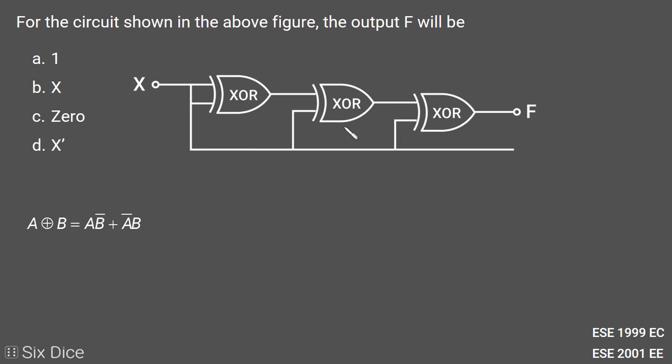We have three XOR gates here. XOR of two variables is defined as A⊕B = AB̄ + ĀB. Now in the first XOR gate, we are XORing X with X.